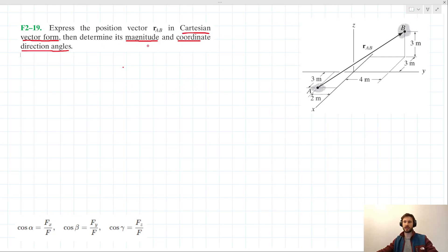Cartesian vector form - how might we determine that? Well, evidently we might want to find its i, j, and k components, or its x, y, and z components - same thing.